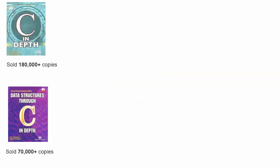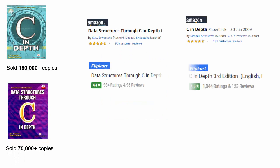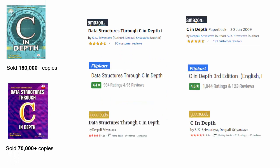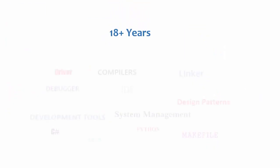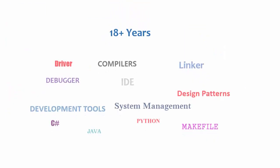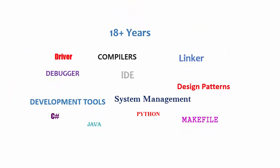My name is Suresh Kumar Srivastava. I am an author. I have written two books, one on C language and the other on data structures. I have 18 plus years of experience in the software industry, worked mostly on the system side and did the architecture and design of various products and tools.